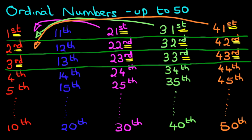And all the rest are the same. So you've got 4th, 14th, 24th, 34th, 44th. So those are the ordinal numbers up to 50.